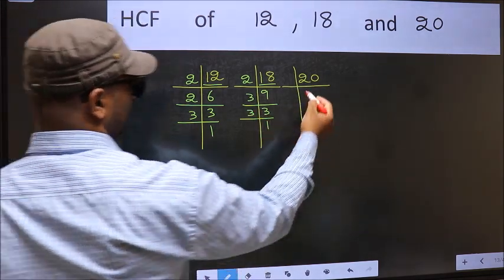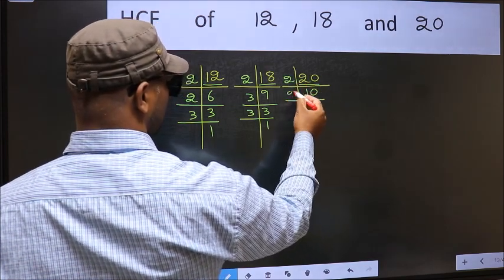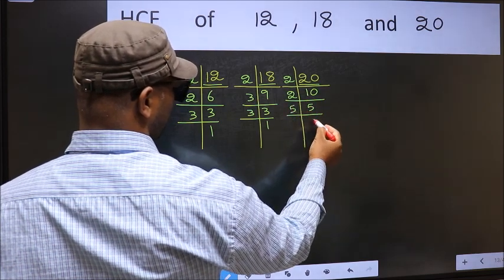Now the other number 20 is 2, 10's 20. 10 is 2, 5's 10. Now 5 is a prime number so 5 once is 5.